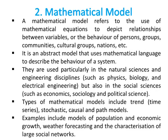The second type is the mathematical model, which uses mathematical equations to depict relationships between variables or the behavior of persons, groups, communities, cultural groups, nations, etc. It is an abstract model that uses mathematical language to describe the behavior of a system. Mathematical models are used in natural sciences and engineering — such as physics, biology, and electrical engineering — as well as in social sciences such as economics, sociology, and political science. Types include trend, time series, stochastic, causal, and path models. Examples include models of population and economic growth, weather forecasting, and characterization of large social networks.